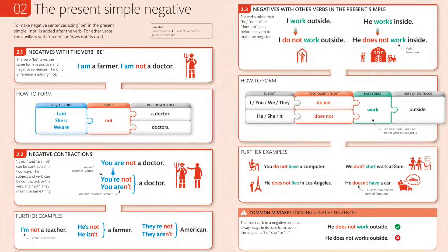Let's have further examples: 'I'm not a doctor,' 'I'm not a teacher,' 'He's not a farmer,' 'They're not American,' 'They aren't American.' Moving to the next point — negatives with other verbs in the present simple.